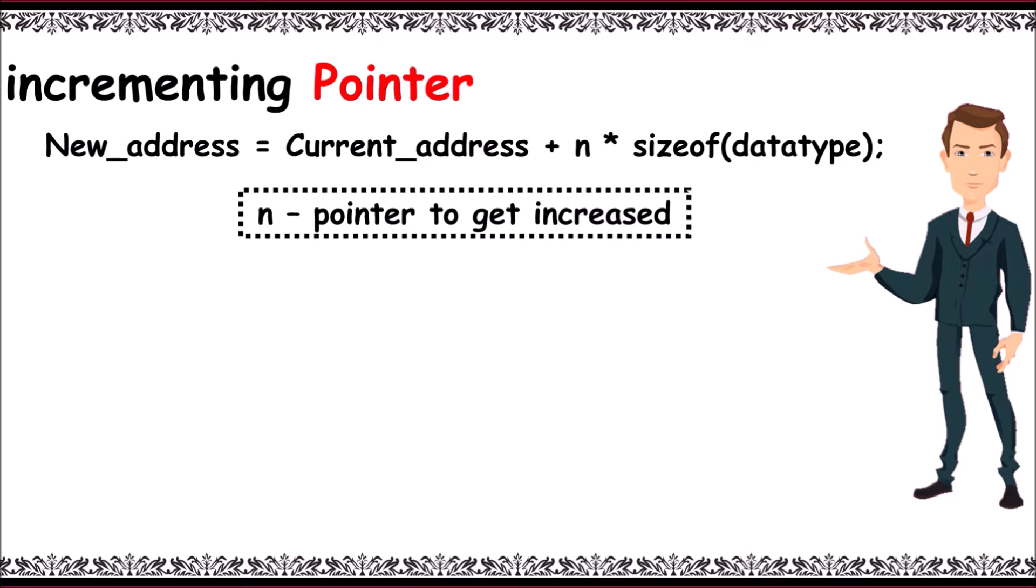You need to note that for int data type, if we use a 32-bit compiler, it increments by 2 bytes, whereas if we use a 64-bit compiler, it increments by 4 bytes.